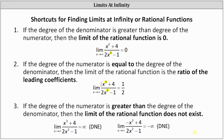Case three: when the degree of the numerator is greater than the degree of the denominator, the limit of the rational function does not exist. In both examples, the degree of the numerator exceeds the denominator, so the limit will be either positive infinity or negative infinity — both of which do not exist as real numbers. We determine whether it's positive or negative infinity by paying close attention to the signs in the quotient.